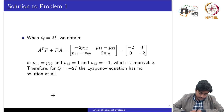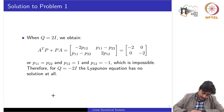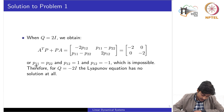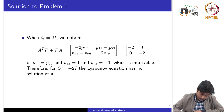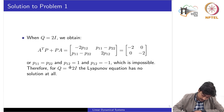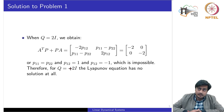Choosing Q as a strictly positive definite matrix and solving for all Pᵢⱼ, we obtain P₁₁ = P₂₂ and P₁₂ = 1 and P₁₂ = −1 simultaneously, which is not possible. So for Q = 2I, the Lyapunov equation has no solution at all.